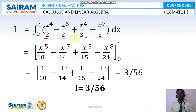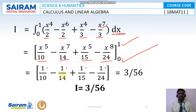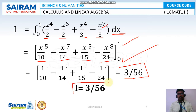Now integrate each term with respect to x. The x⁴ integration gives x⁵/10, the x⁷ term gives x⁷/14, the x⁵ term gives x⁵/15, and the x⁸ term gives x⁸/24. Substituting the upper limit x = 1 and lower limit x = 0, we get 1/10 − 1/14 + 1/15 − 1/24. Taking the LCM, the simplified answer is 3/56. So this is the area of the region: 3/56.